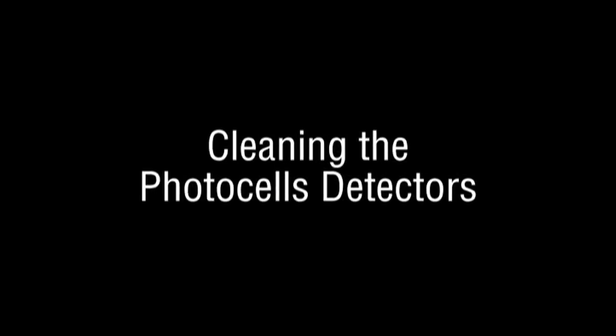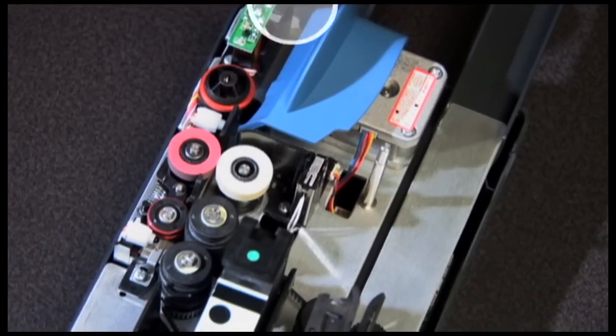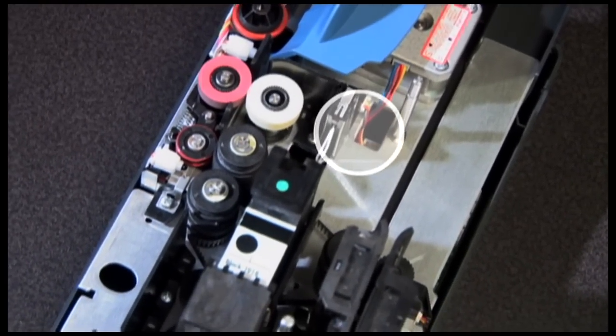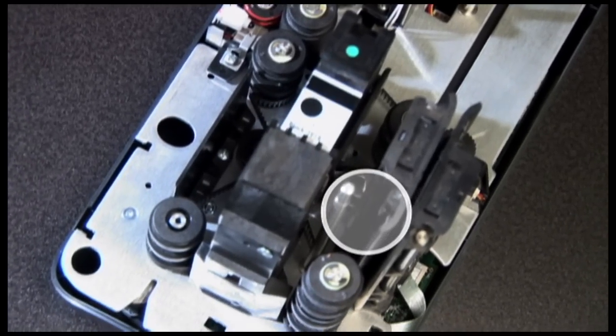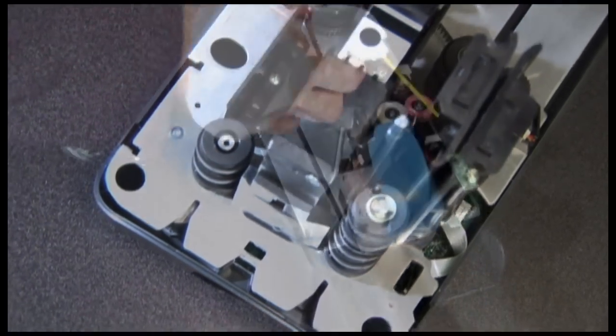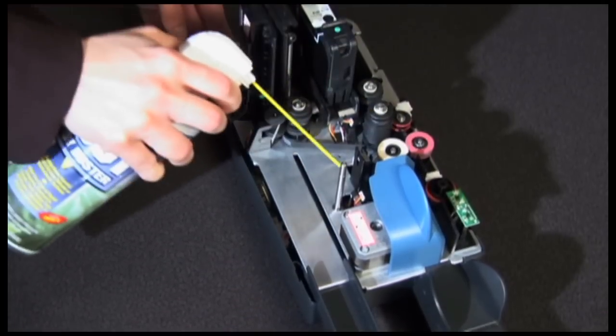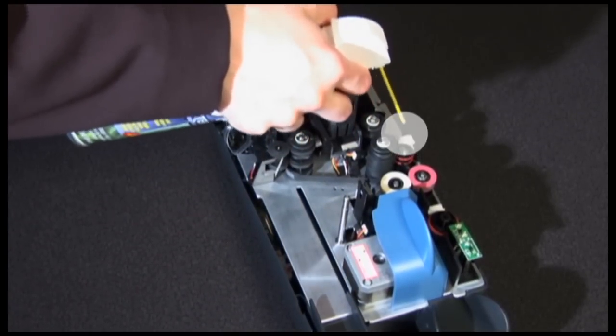Cleaning the photocell detectors throughout the device can lead to a cleaner, more efficient scanner. The six photocells are identified with white circles. Using a container of canned air and nozzle, spray the sensors to remove any dust. A dry, soft cloth can also be used.